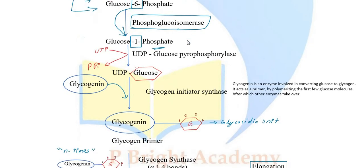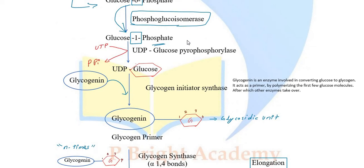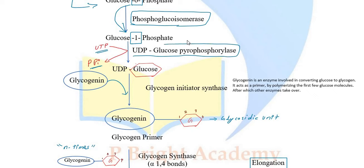In the next step, glucose-1-phosphate is converted to UDP-glucose. UDP stands for uridine diphosphate. Uridine triphosphate reacts and pyrophosphate is released, leaving uridine diphosphate combined with glucose to form UDP-glucose.